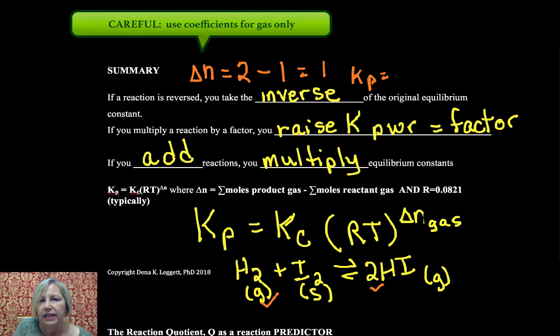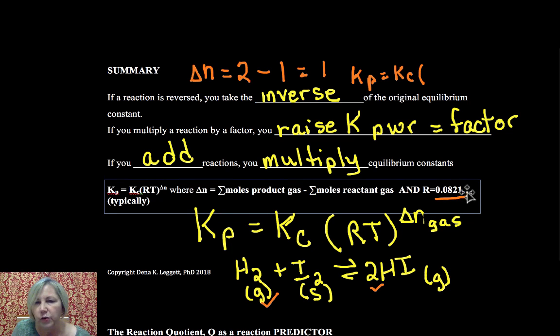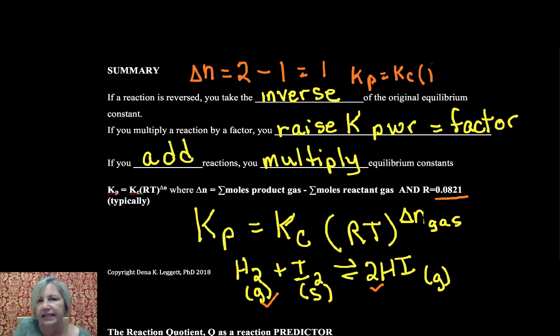So in that case, KP would equal KC times R, and you have to use 0.0821, it was derived from that, times whatever temperature you are measuring this at.